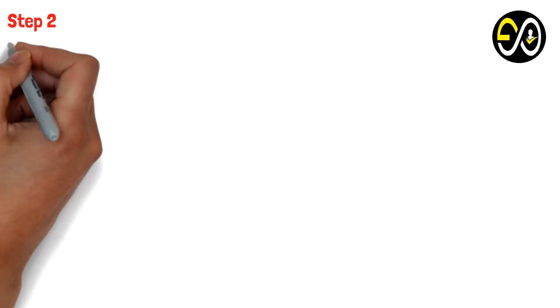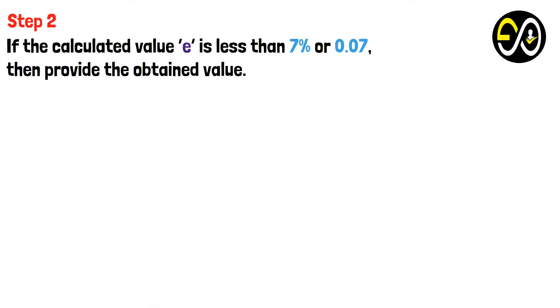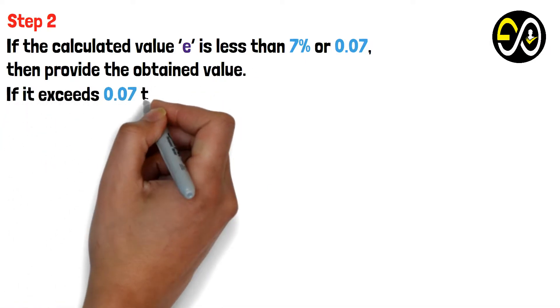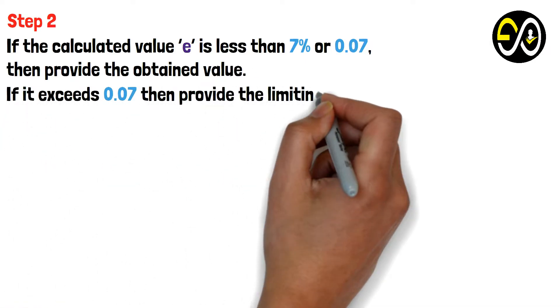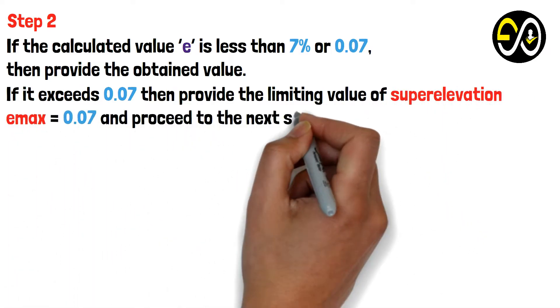Step 2: If the calculated value e is less than 7% or 0.07, then provide the obtained value. If it exceeds 0.07, then provide the limiting value of superelevation e_max = 0.07 and proceed to the next step.